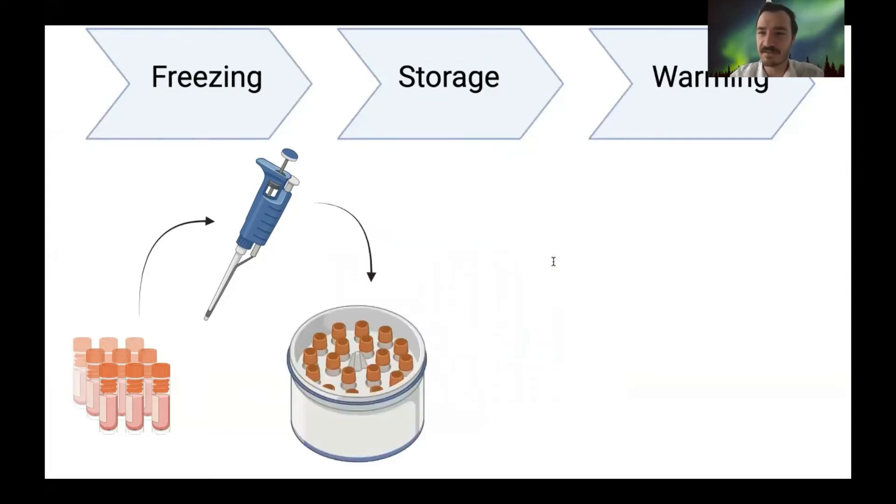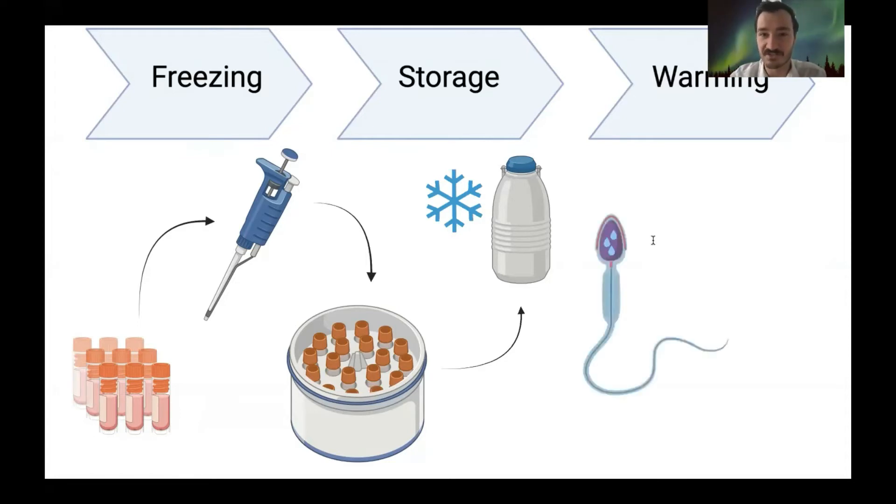Once we've added the CPAs, we add the samples to a freezing device. This is a common one here called Mr. Frosty. The samples are frozen slowly at a controlled rate and stored for future use in liquid nitrogen. During this freezing step, slow cooling protocols actually encourage ice formation, quite ironic, not within but externally to the cells. This draws more water out of the cell, a process called seeding.